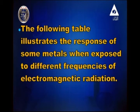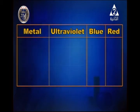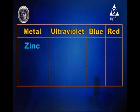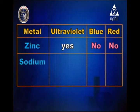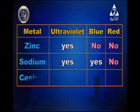The following table illustrates the response of some metals when exposed to different frequencies of electromagnetic radiation. For zinc: ultraviolet managed to extract electrons, but blue and red did not. For sodium: ultraviolet managed and blue also managed to extract electrons from the surface of sodium, but red did not.